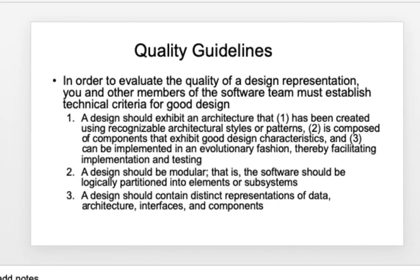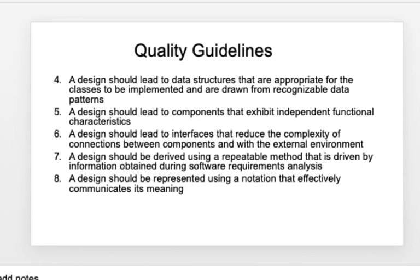A good design should exhibit an architecture created using suitable architectural styles and patterns, and it should be evolutionary in nature. It should be modular — logically partitioned into subsystems — and contain distinct representations of data architecture, interfaces, and components. It should have suitable data structures for different classes of systems and their corresponding patterns. Components should exhibit independent functional characteristics. Interfaces should reduce the complexity of connections between components, and the design should be derived from a repeatable method and represented using effective notations.